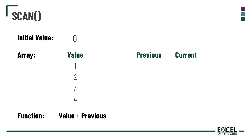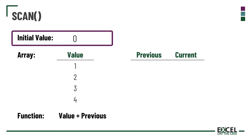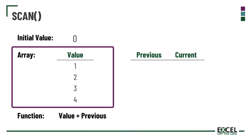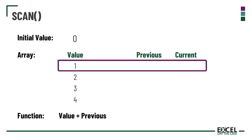Let's take a look at a simple example. We have our three arguments: initial value, array, and function. The initial value is 0, the array contains the numbers 1, 2, 3, and 4, and the function performs value plus the previous result. For our first calculation the value in the array is 1. We don't have a previous result, so we use the initial value: 1 plus 0 gives us 1.